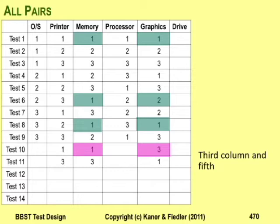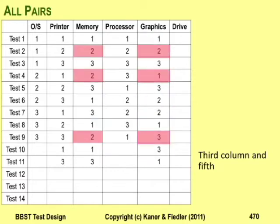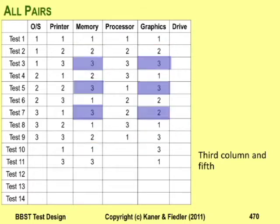Just set the value for memory to one. For memory two, there's a two with a one, a two with a two, and a two with a three. For memory three, there's a three with a three, a three with a two, but not a three with a one. So add the three into test 11.